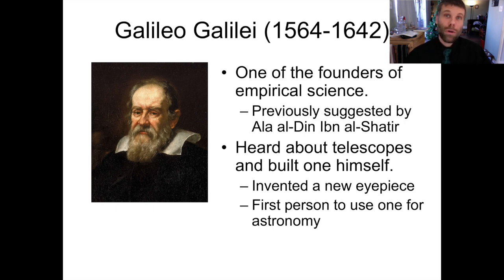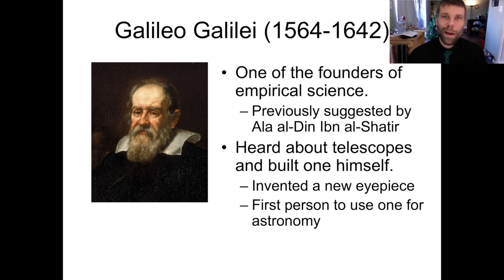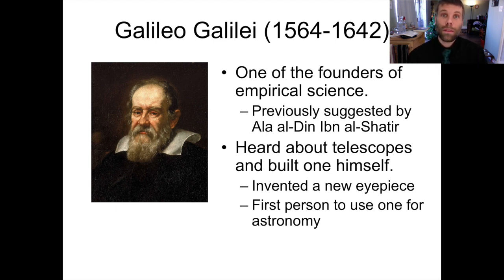Galileo is famous for astronomy, but also for physics, and as one of the founders of modern science — the discipline of using experimental and observational empiricism to drive results. He was not the first person to propose this. We know that an Arab astronomer by the name of Alaa al-Din ibn al-Shatir also proposed an empirical approach to science, getting rid of a lot of the philosophical baggage introduced by the ancient Greek natural philosophers. But when al-Shatir proposed a purely empirical approach to astronomy, it didn't really stick. When Galileo proposed it a few centuries later, it did, and it became common among European scientists to base conclusions on observed results.